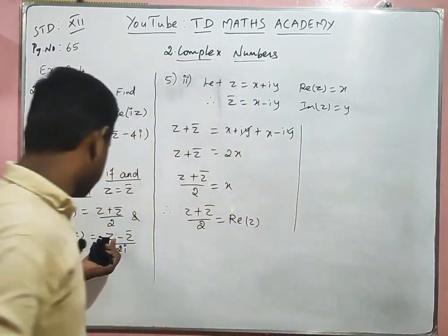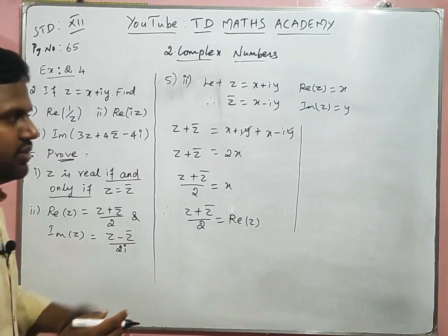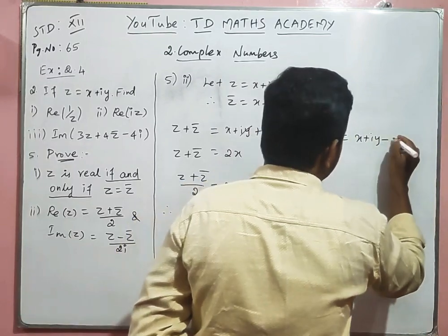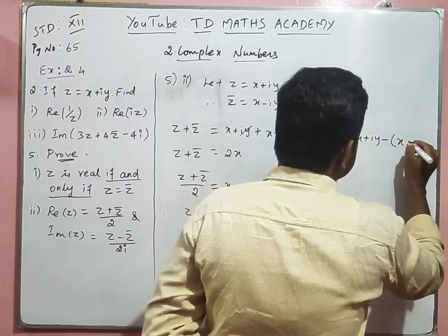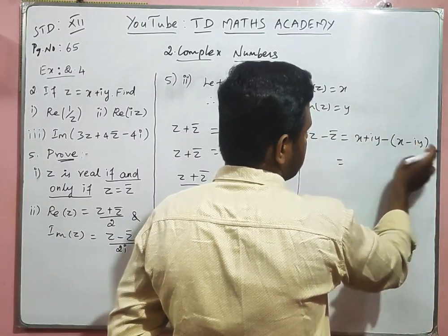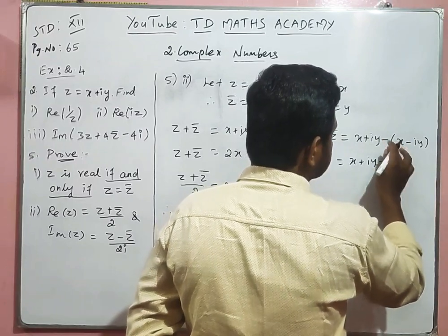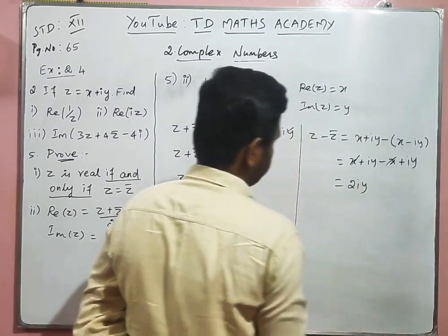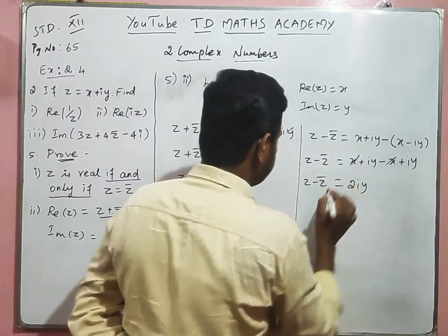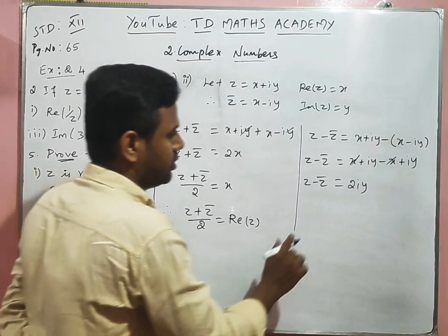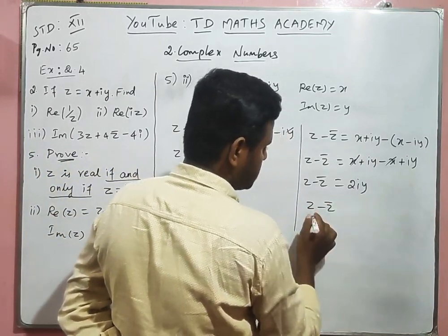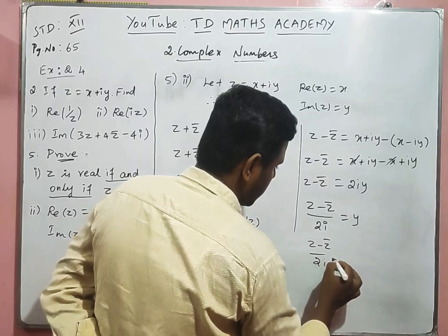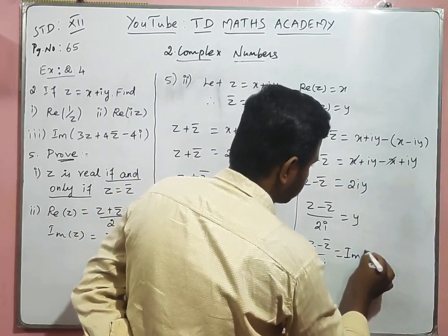Similarly, for Im(z) = (z - z̄)/2i: z - z̄ = (x + iy) - (x - iy) = x + iy - x + iy = 2iy. Therefore (z - z̄)/2i = 2iy/2i = y. Since y is the imaginary part of z, (z - z̄)/2i = Im(z). Hence proved.